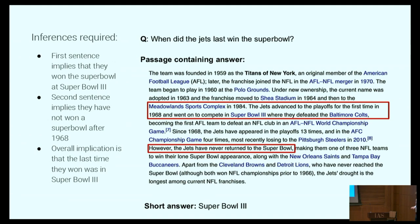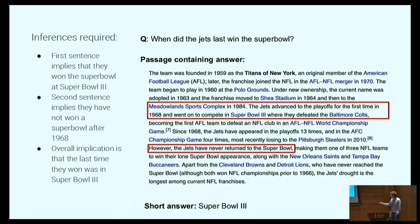Here's another example: 'When did the Jets last win the Super Bowl?' It would be easy to find this answer in a knowledge graph, but let's look at the text on a web page. It says: 'The Jets advanced to the playoffs for the first time in 1968 and went to compete in Super Bowl III where they defeated the Baltimore Colts.' Then it says: 'However, the Jets have never returned to the Super Bowl.' This is actually a multi-sentence inference — it's clear from this narrative that the last time the Jets won the Super Bowl was in Super Bowl III. For people who know their football, if the playoffs were in '68 the Super Bowl was actually played in '69, so 1968 is actually a dubious answer here. There's a complex relationship between these two sentences and complex inference going on.